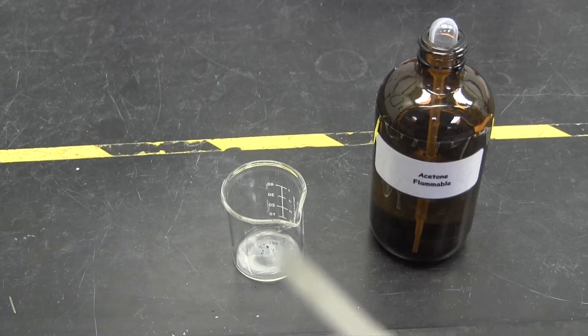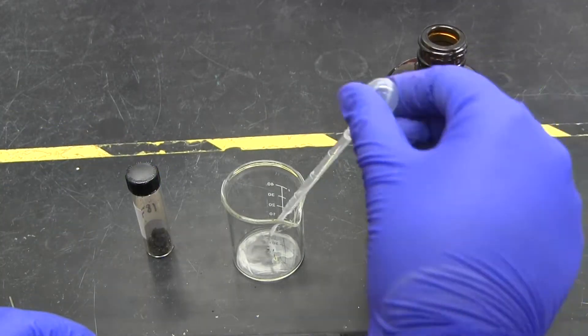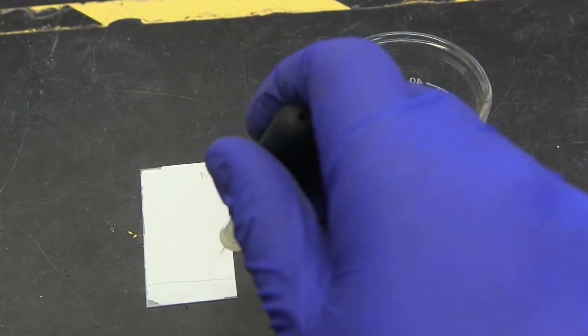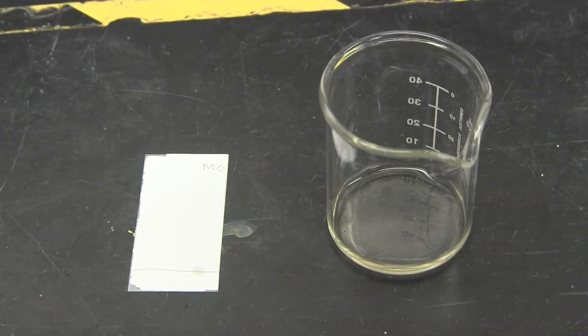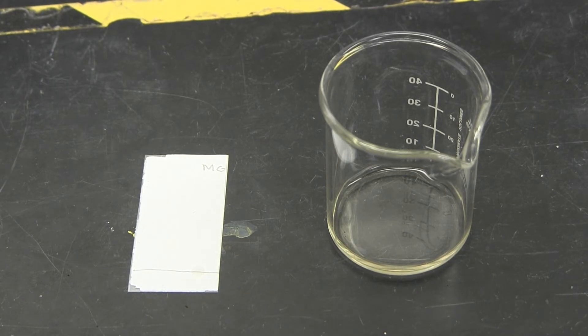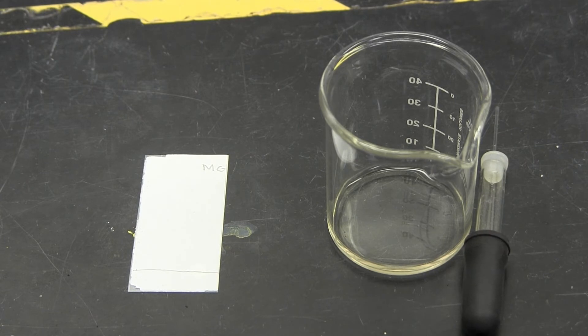Create a standard using a drop of your unknown and one milliliter of acetone. Using a capillary tube, dot your standard on the pencil line at the bottom of the plate. You will use the same capillary tube the entire lab. You do not need to squeeze the bulb. The tube will suck up liquid on its own using capillary action.